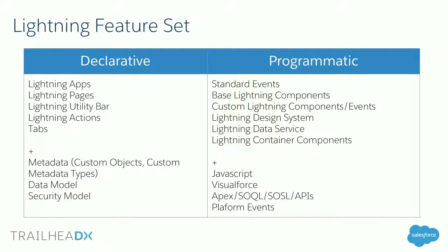There are two aspects that need to be fully understood. The first is around what can be done in Lightning from a declarative standpoint — understanding the various capabilities Lightning apps have, such as the Lightning utility bar, branding, Lightning pages, utility bar features that make one or more components available at any point in the app, Lightning actions, and tabs. It's also important to think about whether your components will need a metadata layer — things like custom objects storing configuration data that your Lightning components read dynamically, or using custom metadata types which have a slightly narrower scope. You'll always need things like data model and security.